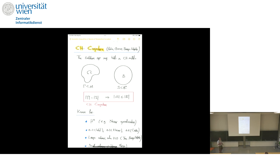This is the famous Cartan-Hadamard conjecture, proposed by several people more or less around the same time — starting with Aubin in the 1960s, then Gromov, Burago, and Aguilar — that the Euclidean isoperimetric inequality should hold in Cartan-Hadamard manifolds. If you have a domain in your Cartan-Hadamard manifold with hypersurface gamma bounding a region omega, and compare it to a ball of the same area, then the volume should be less than that of the ball. This is a major open problem in Riemannian geometry.